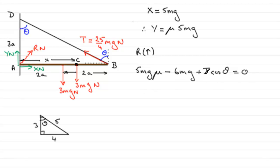So, let's just put in the values for T and cos theta. So, therefore, what we have now is 5MG mu minus 6MG plus the tension T, which is 25 over 4 MG times cos theta. And cos theta is going to be adjacent over hypotenuse 3 over 5, 3 fifths. So, pop that in there as 3 fifths. And that equals zero.